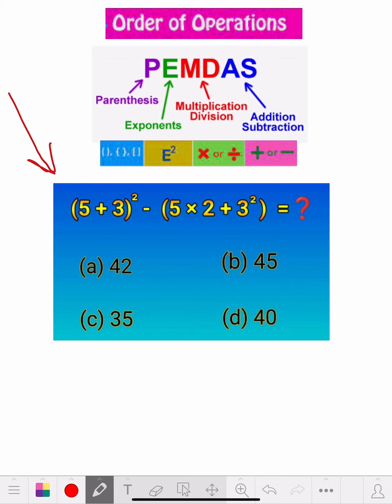They gave us brackets, 5 plus 3, and the brackets, now square, minus brackets, 5 times 2 plus 3 square, and the brackets, equals. You got a question mark, what is it equal to?